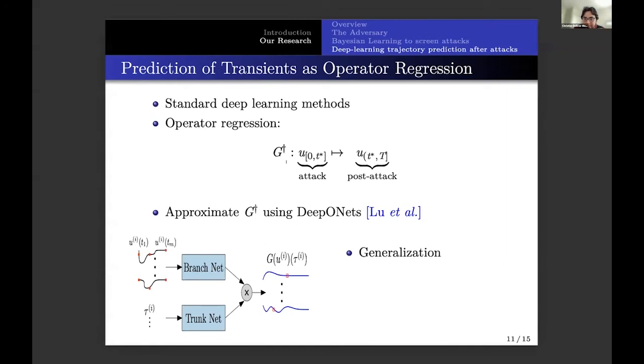And this deep learning method contains two neural networks, one which is called branch net. The branch net takes this input, the input with information about the attack, and the trunk net takes as an input something to create a basis function, such that we can decode the post-attack trajectory. These DeepONets have shown very good generalization, so allowing this will allow us to do extrapolation. They perform very well when data is scarce, when it's expensive, like in the power grid. They allow to train with multi-fidelity kind of data.